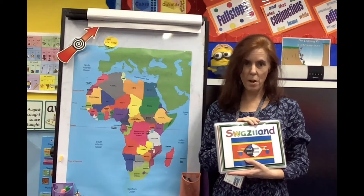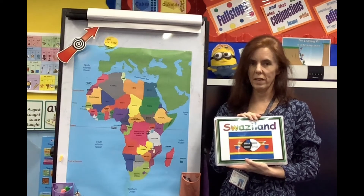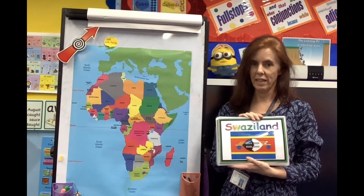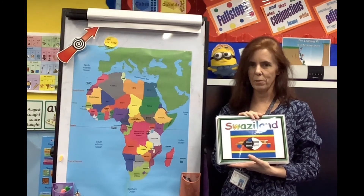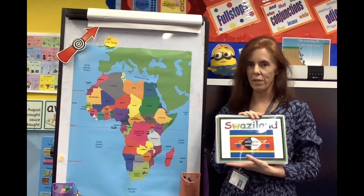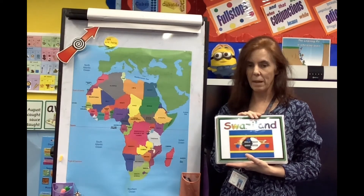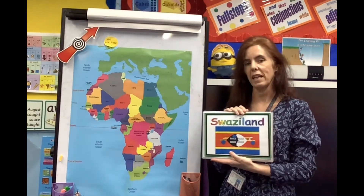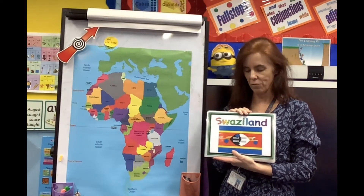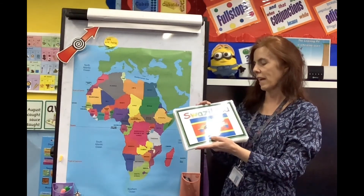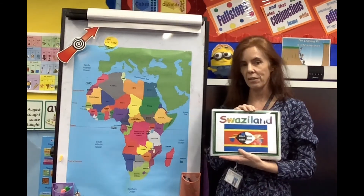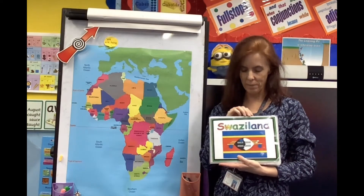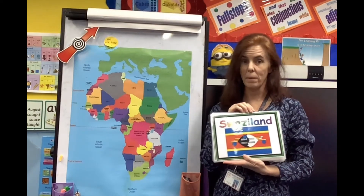At the moment there are 54 countries in Africa, and there are two countries that are disputed, but 54 are officially listed. Some of them have changed their names - in fact this one we're looking at has recently changed. This is Swaziland, which is now called Eswatini, but the flag is still the same.